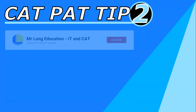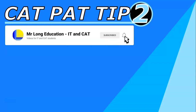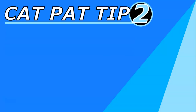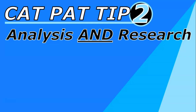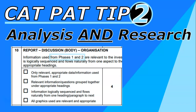CAT PAT tip number two: a lot of people when talking about their findings only discuss what they did in phase two — the analysis, the spreadsheet, the database — but you need to talk about both the analysis and the research. Don't forget that in phase one you did a lot of research, so you need to connect your findings to both. The rubric talks about appropriate information from phase one and phase two.